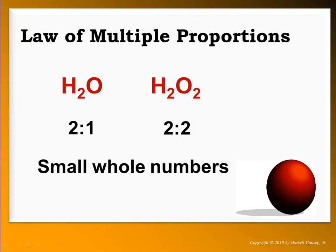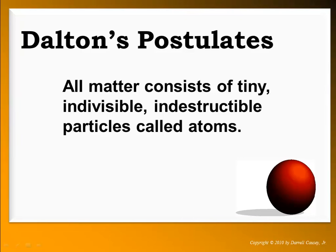These two ideas — the law of definite composition and multiple proportions — along with the beginning idea of what matter is composed of, influenced John Dalton. His first postulate stated that all matter consists of tiny, indivisible, indestructible particles called atoms. These atoms were in honor of Democritus's 'atomos.' But this wasn't entirely correct — we know today they're not indestructible. But it was a good beginning, and he was influenced by Democritus as well as other early scientists.